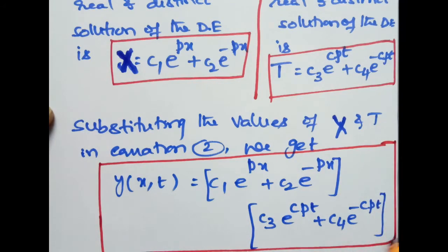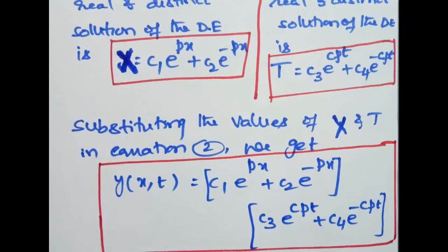Case 2: when k is negative. For our convenience we take k = -p².